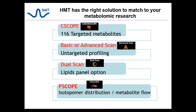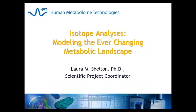In addition to our targeted quantitative solutions C-SCOPE and F-SCOPE, at HMT we also have untargeted profiling capabilities using CE-MS, like basic scan and advanced scan, for true metabolic discovery. If lipids are of interest, we have the ability to add LC analysis to augment the metabolites measured by CE-MS with a dual scan option. With this option, we separate your sample, optimizing for polar metabolites with CE-MS and for lipid metabolites with LC. Altogether, HMT is the right solution to match your metabolic needs.